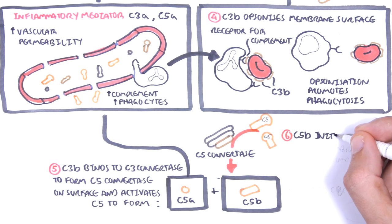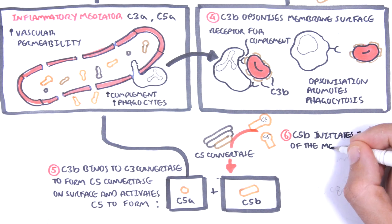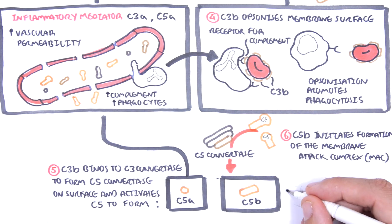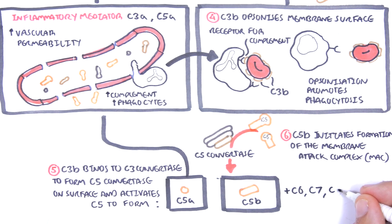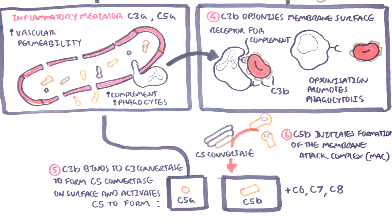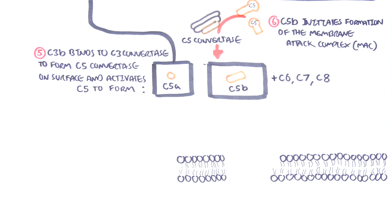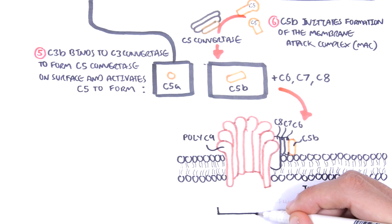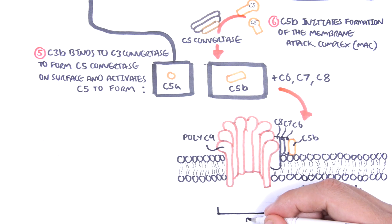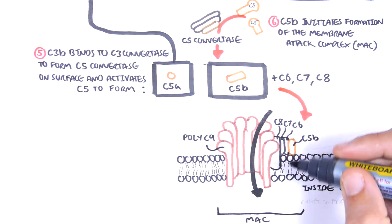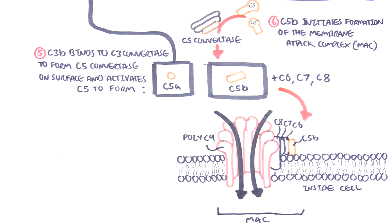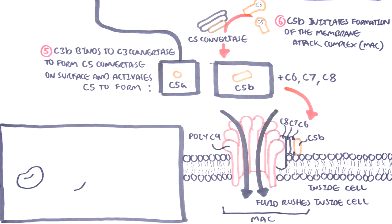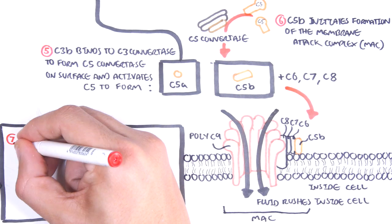C5B initiates formation of the membrane attack complex, known as MAC. C5B binds with C6, C7, and C8 complement proteins, which allow formation of a channel via complement 9 proteins. This whole structure is the membrane attack complex, and what it does is allow fluids to rush inside the cell, causing the cell to lyse. So the membrane attack complex causes lysis of the cell.